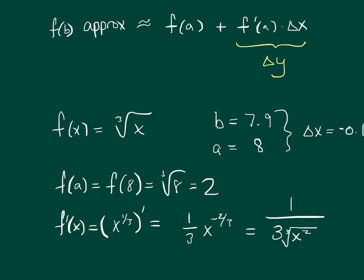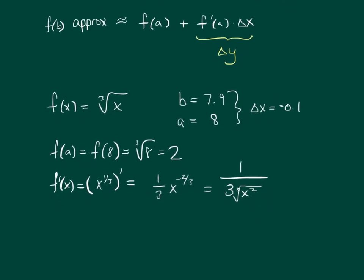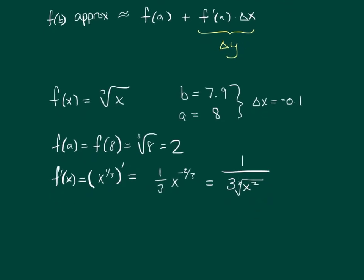Now we've gotten, so far, delta x, f of a, and lastly we need f prime of a before we can figure out our approximation. So f prime of 8 is going to be 1 over 3 times the cube root of 8 squared, which is 1 over 3 times 4.